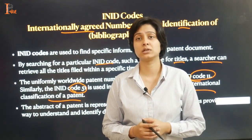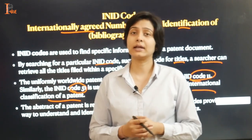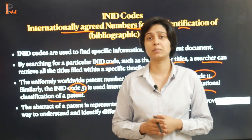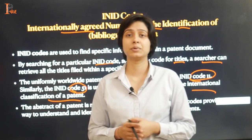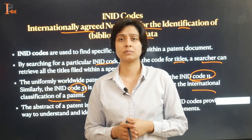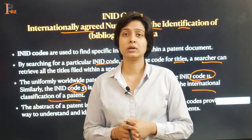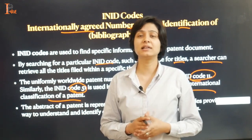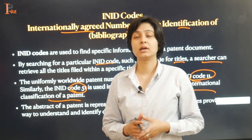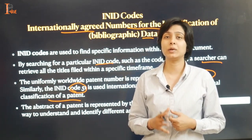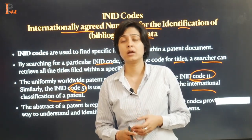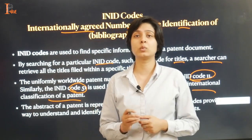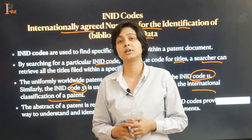Descriptions of an invention are crucial for understanding the scope, technical details, and working of a patent. The description provides information about the field of invention, the background, and the purpose and objective of the invention. It may include experimental details and other research information related to the invention. Understanding the description is essential for patent searchers to evaluate its relevance and potential improvements, and it can inspire new ideas for further development.